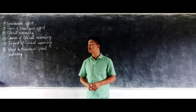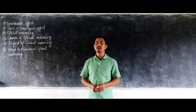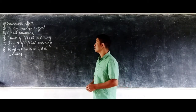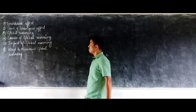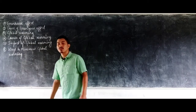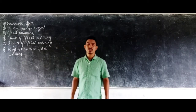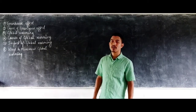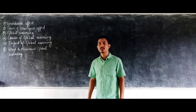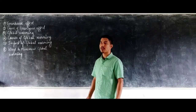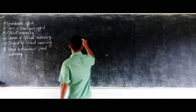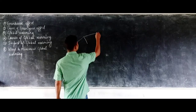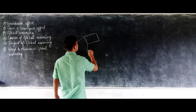The last part of the chapter will be dealing with the greenhouse effect and global warming. What is a greenhouse effect? Long ago, a person living in a very cold country, in order to preserve his plants, made a house completely made up of glass.